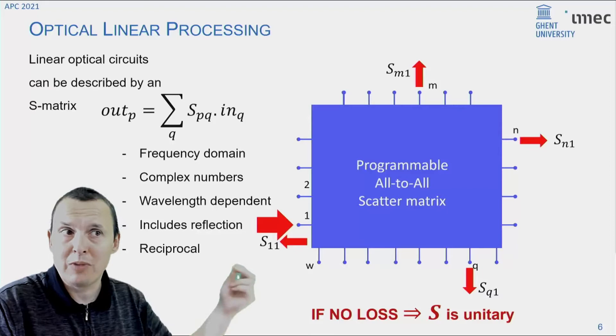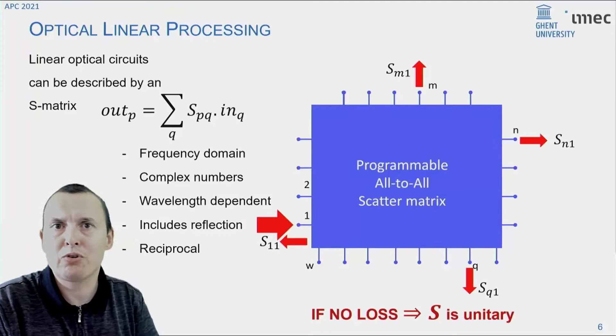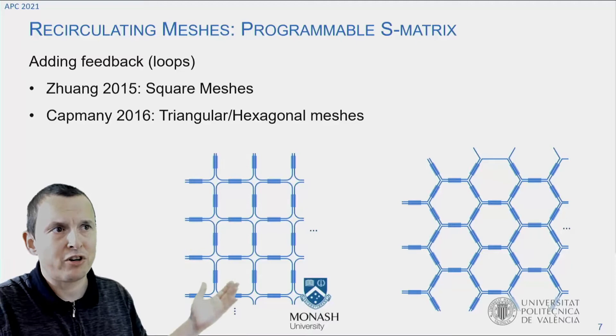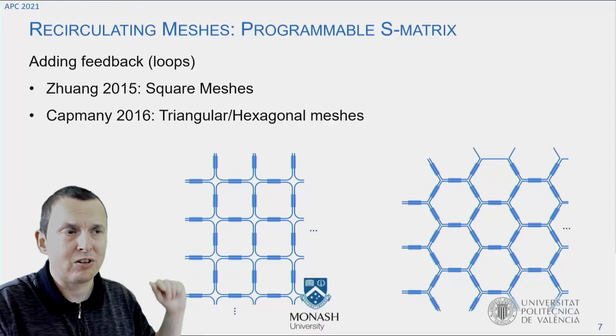So you can describe the functionality by this matrix, which contains complex numbers for phase and amplitude and frequency-dependent response to make wavelength filters. So if you can control all these scatter parameters, you can control the function of this entire circuit. Now, the big question is, how would you make this programmable all-to-all scatter matrix? Well, the solution was already proposed quite a lot of years ago, like five, six years ago, in the form of recirculating waveguide meshes.